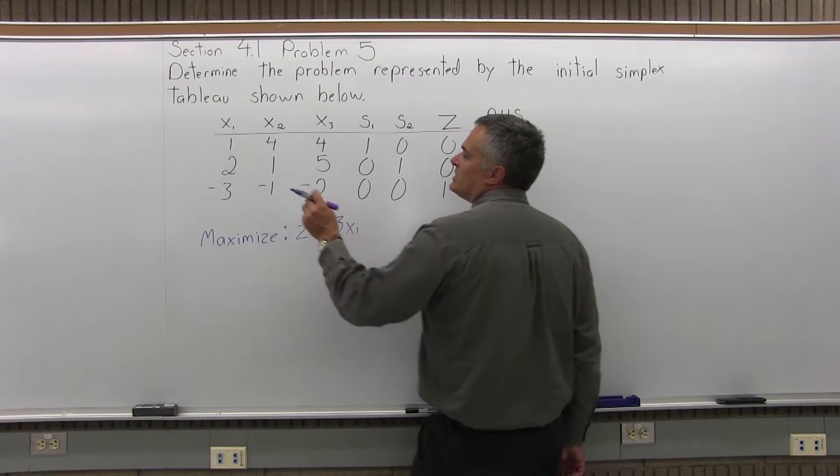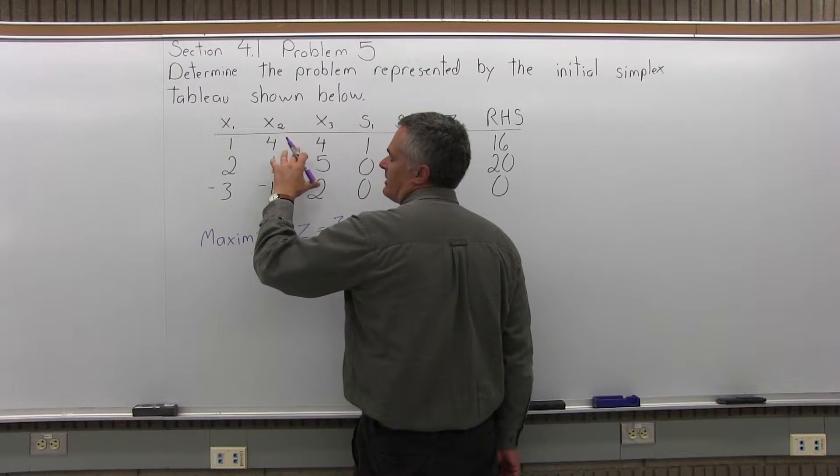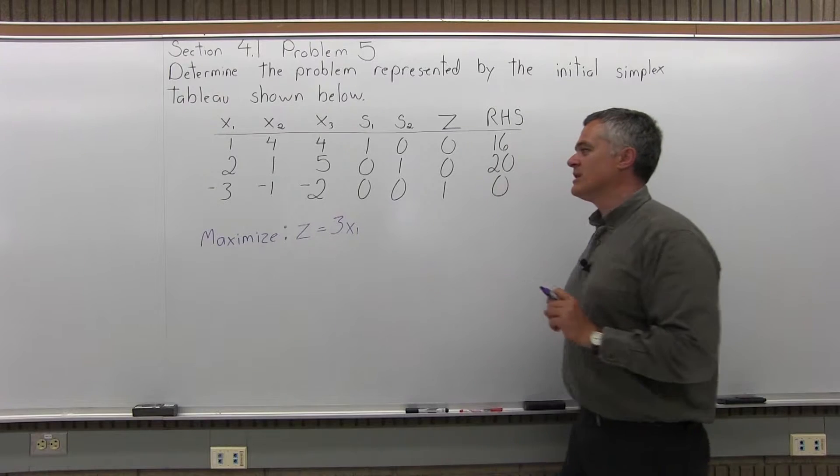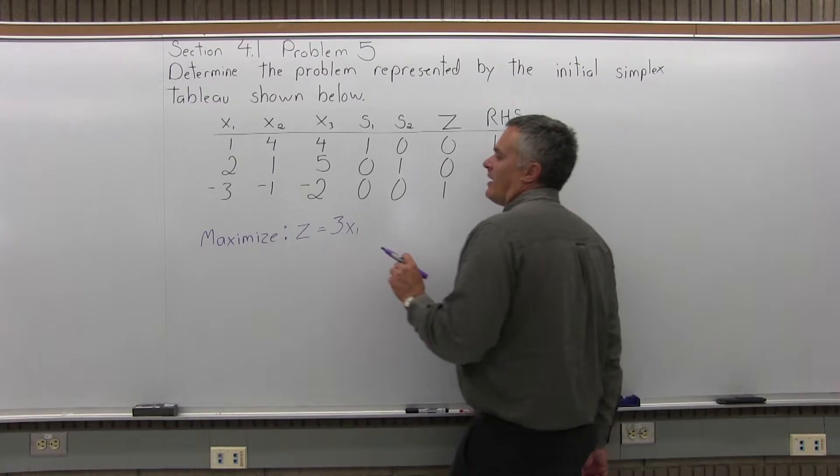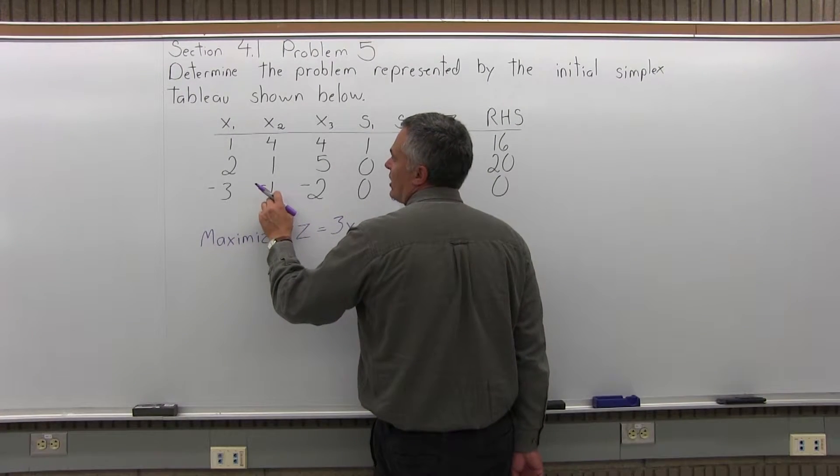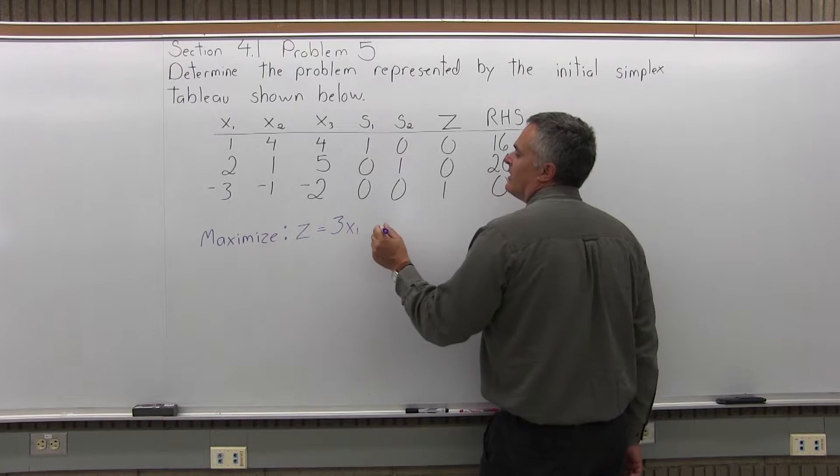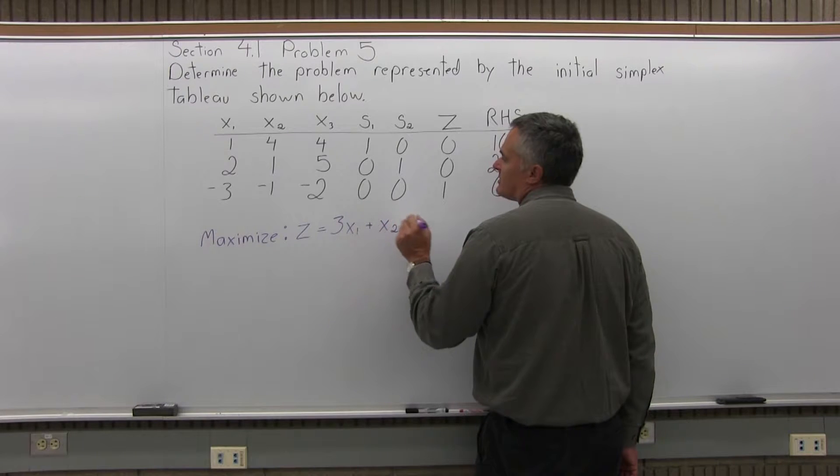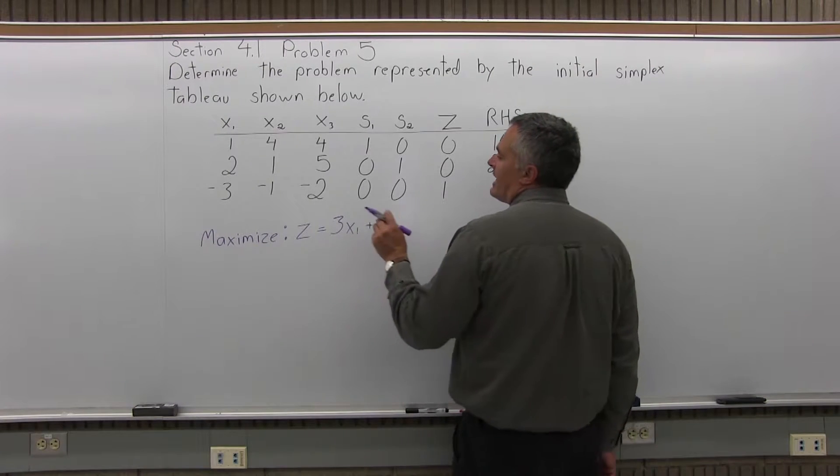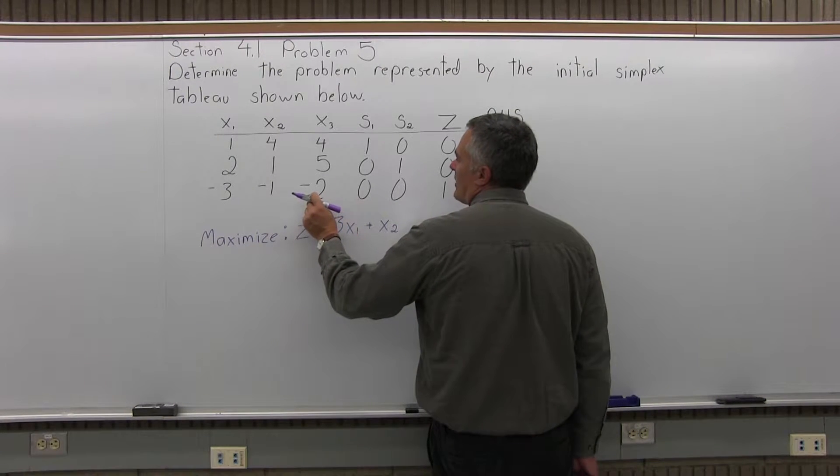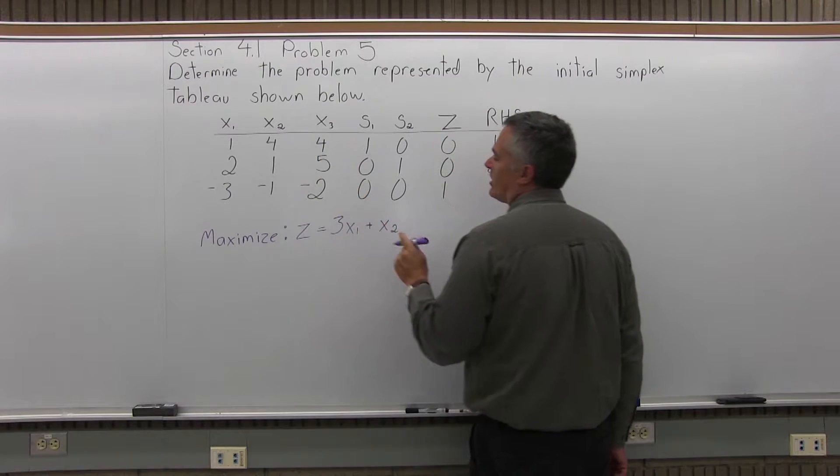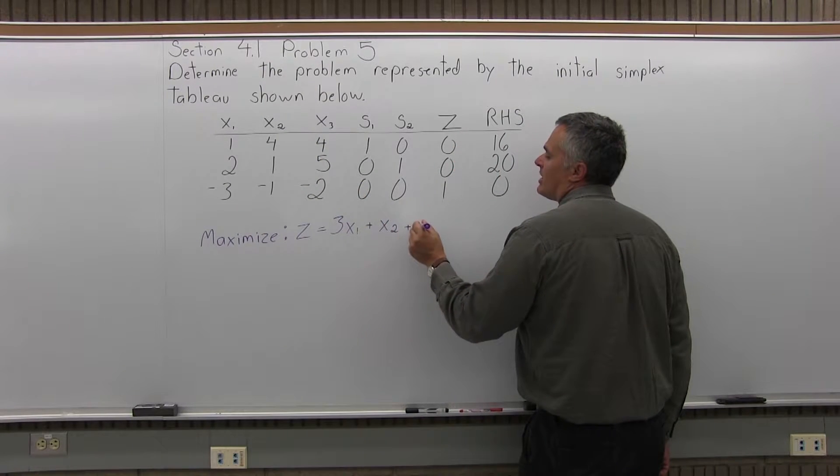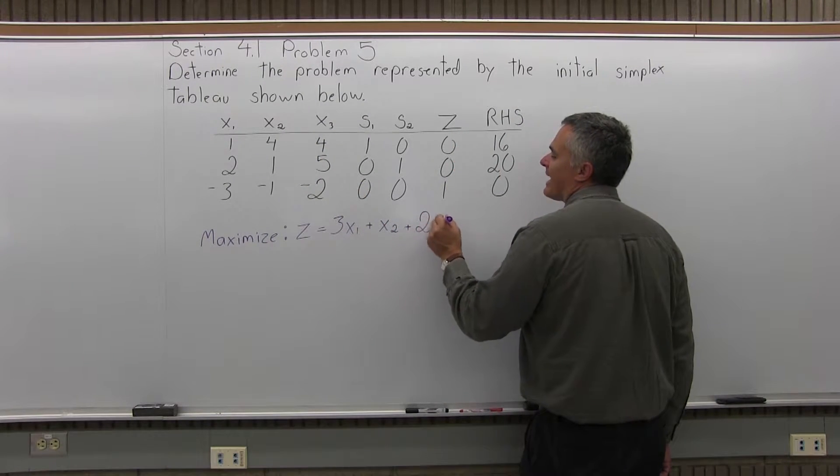Because remember, these were moved when initially this initial simplex tableau was set up. But the next column over, the X2 column, has a -1 in it, so it would have been plus 1X2, or just plus X2. And then the next column over in my bottom row has a -2 in the X3 column, so it would have been plus 2X3.